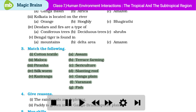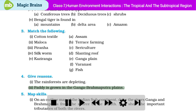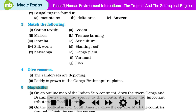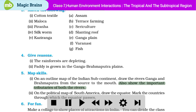Give reasons: Part 1: The rainforests are depleting. Part 2: Paddy is grown in the Ganga Brahmaputra plains. Map skills: Part 1: On an outline map of the Indian subcontinent, draw the rivers Ganga and Brahmaputra from the source to the mouth. Also show the important tributaries of both the rivers.